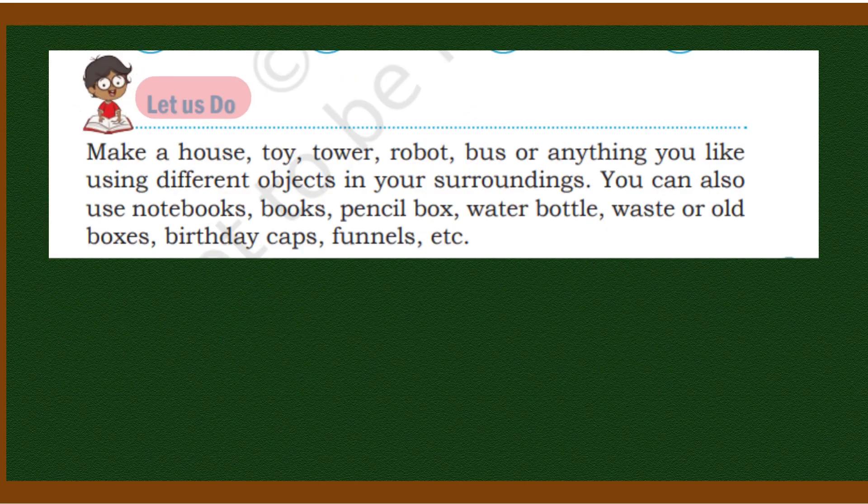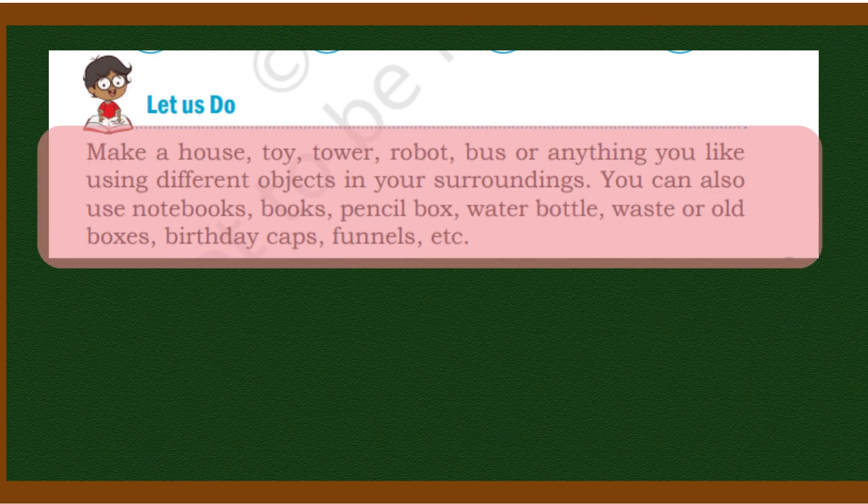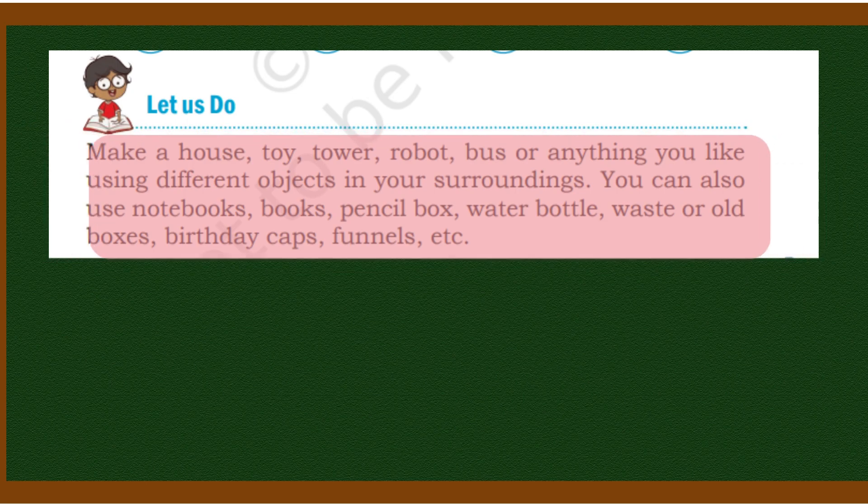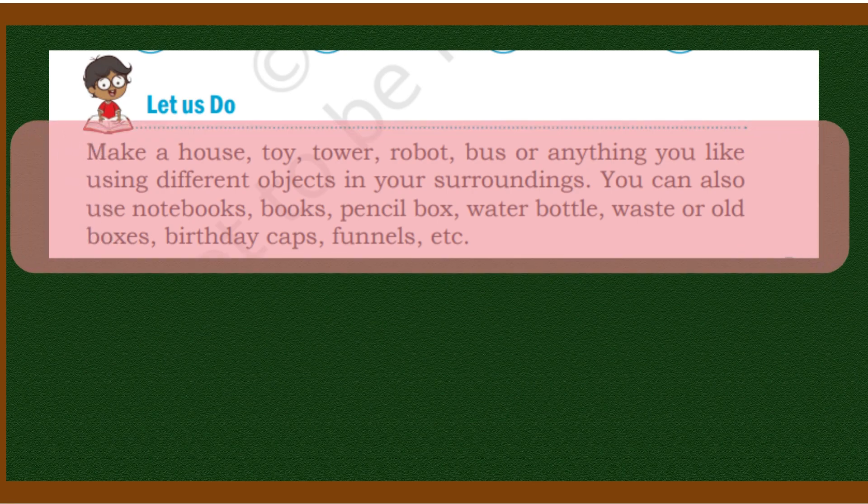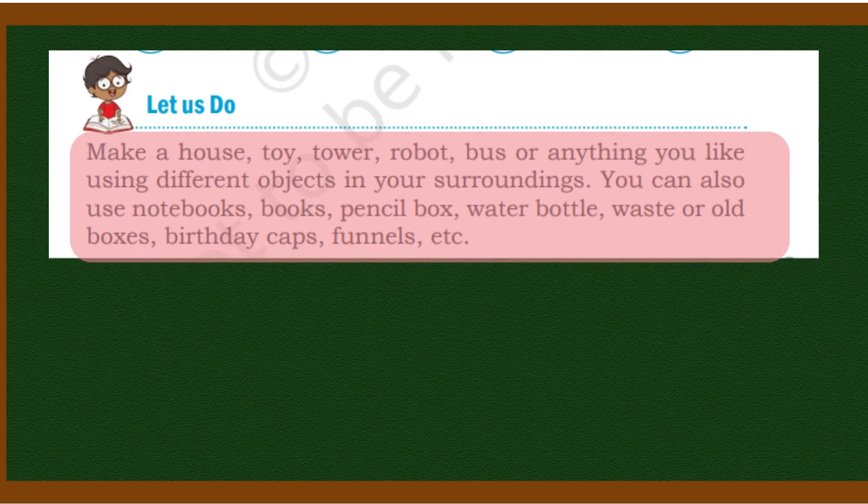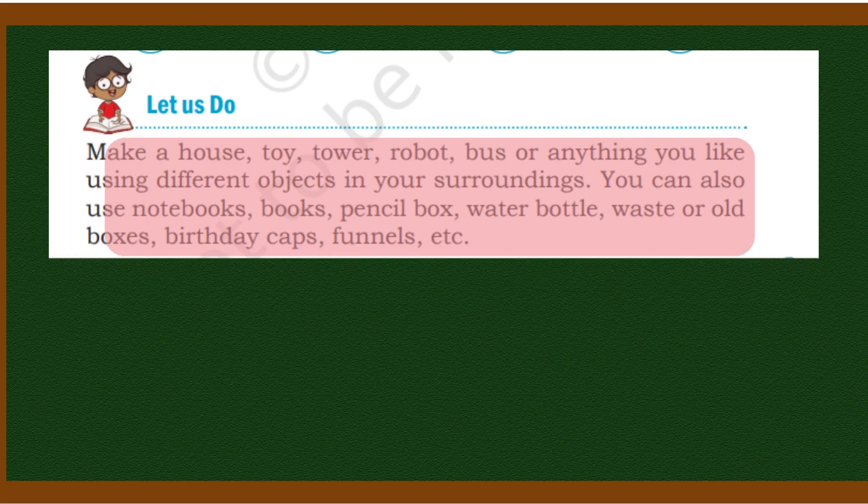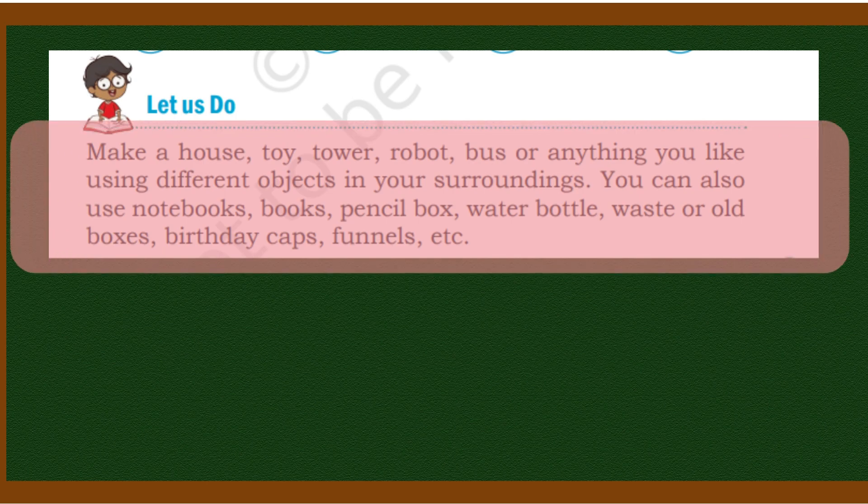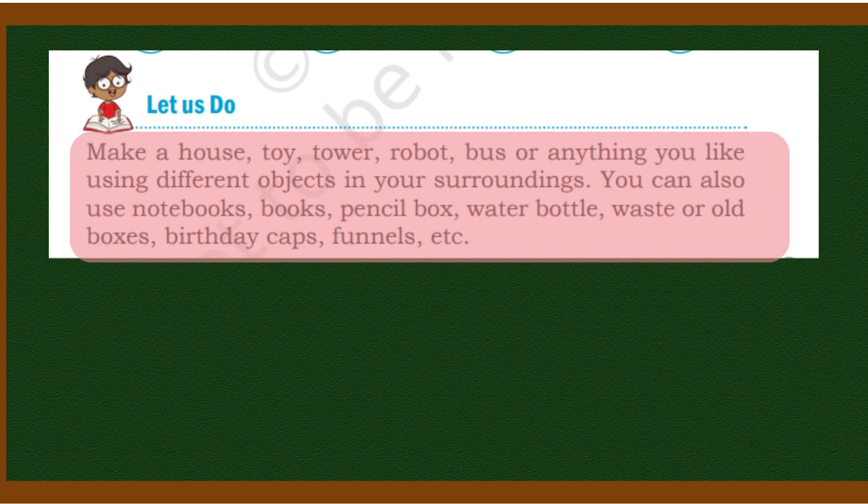Next part is 'Let Us Do.' What do we have to do here? Make a house, toy, tower, robot, bus, or anything you like using different objects in your surroundings. You can also use notebooks, pencils, pencil box, water bottle, waste or old boxes, birthday caps, funnels, etc. We have to create anything using any objects. We can make a house or any toy.